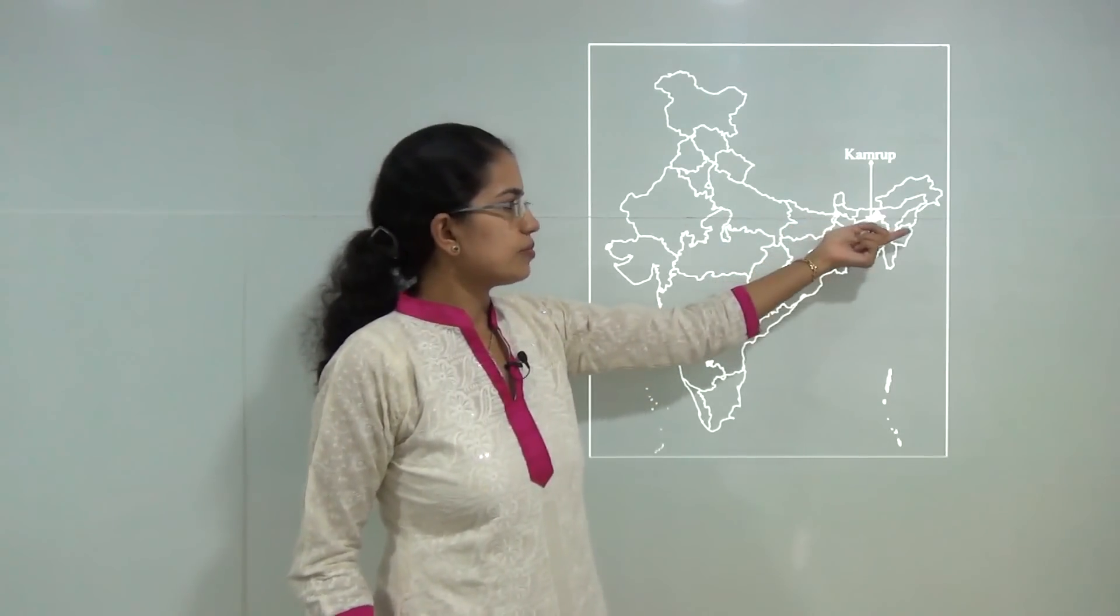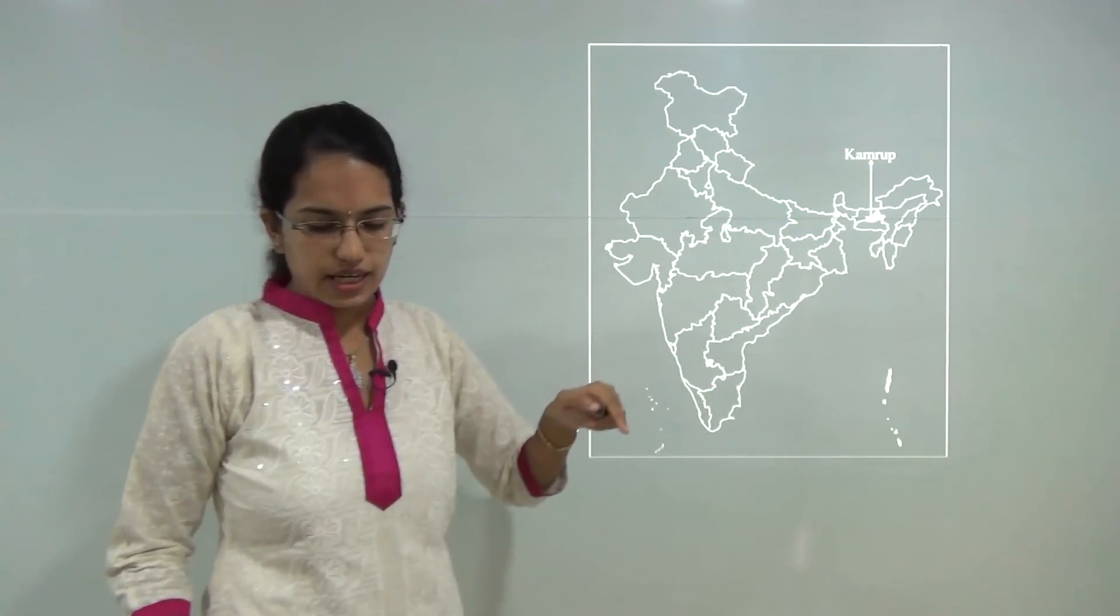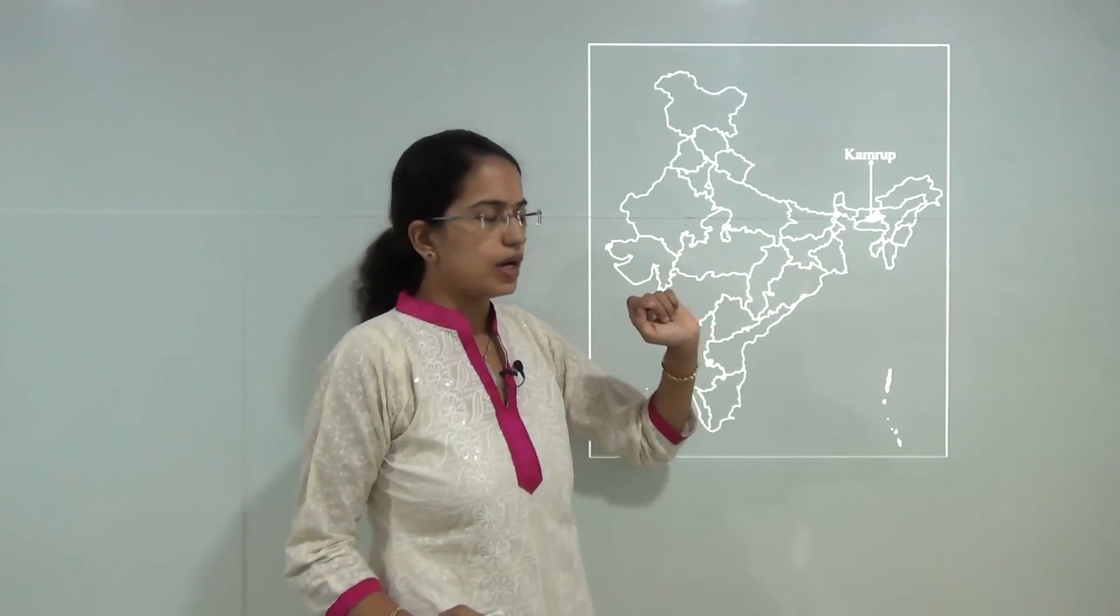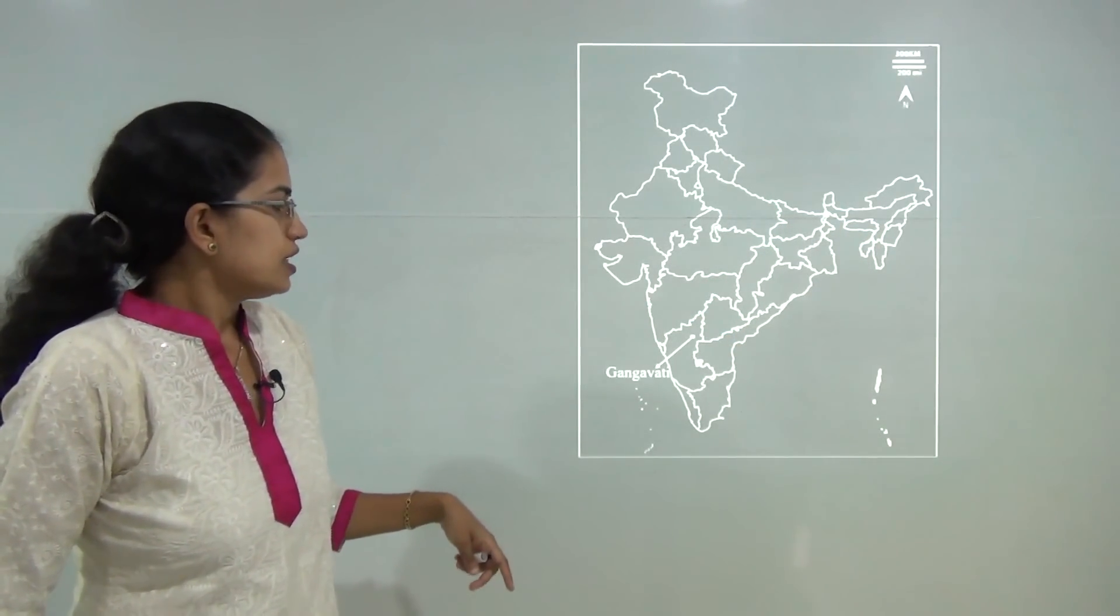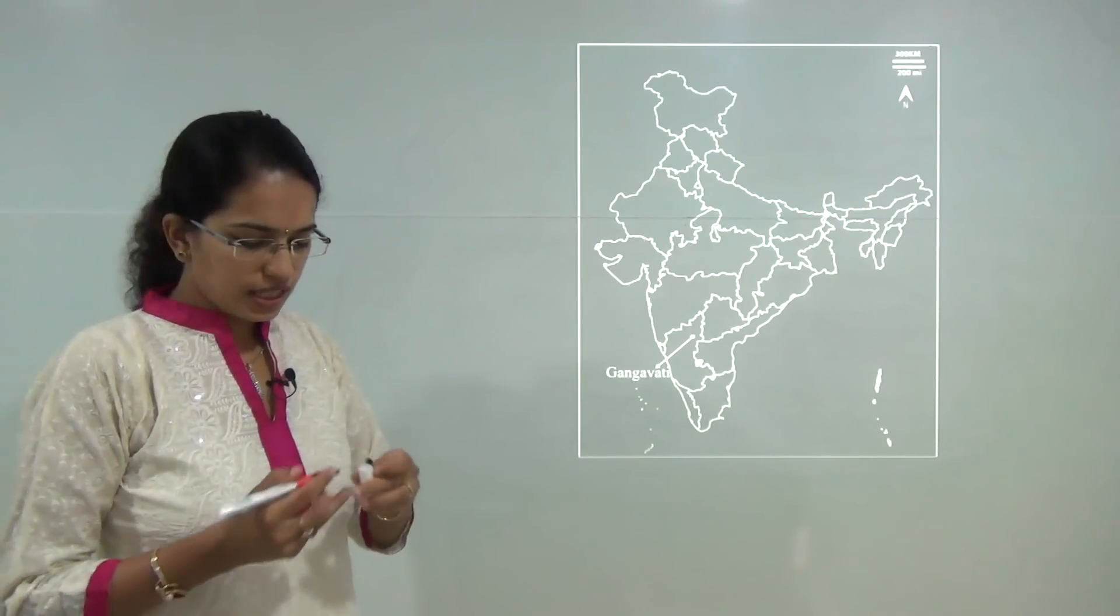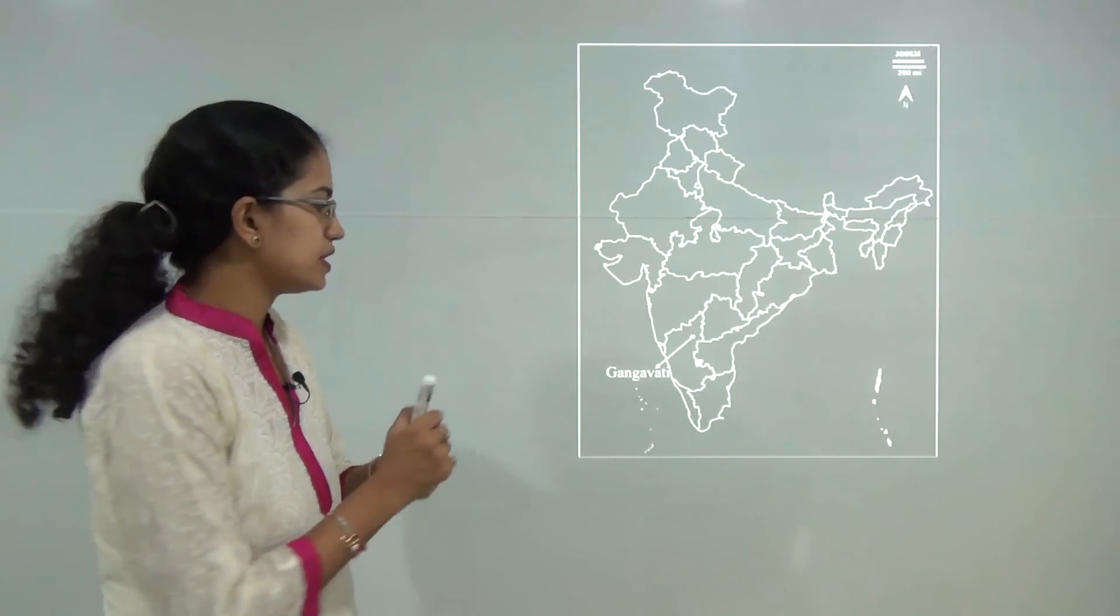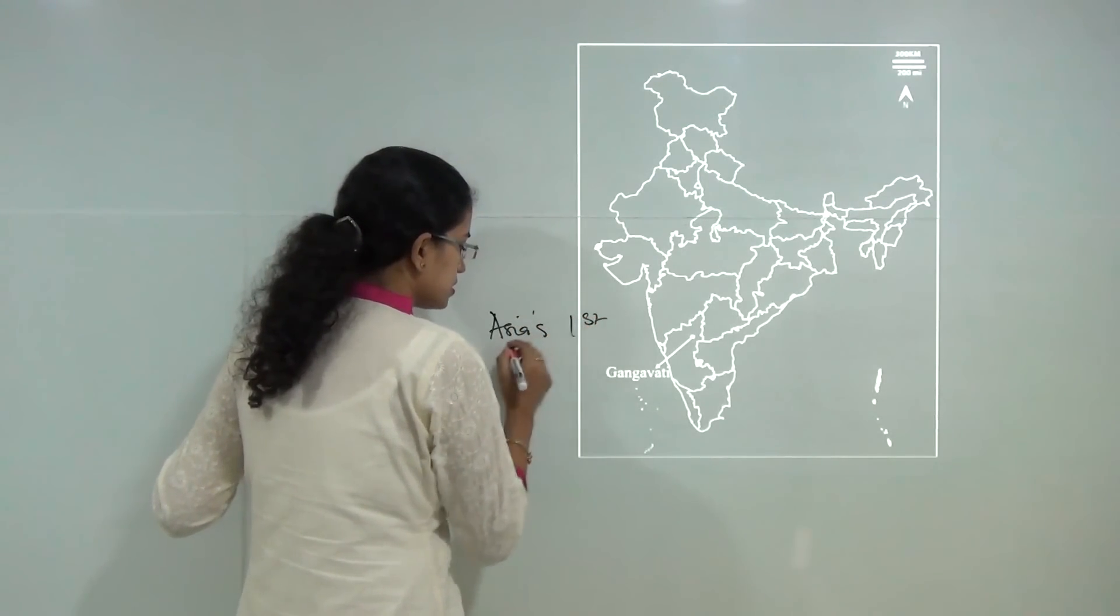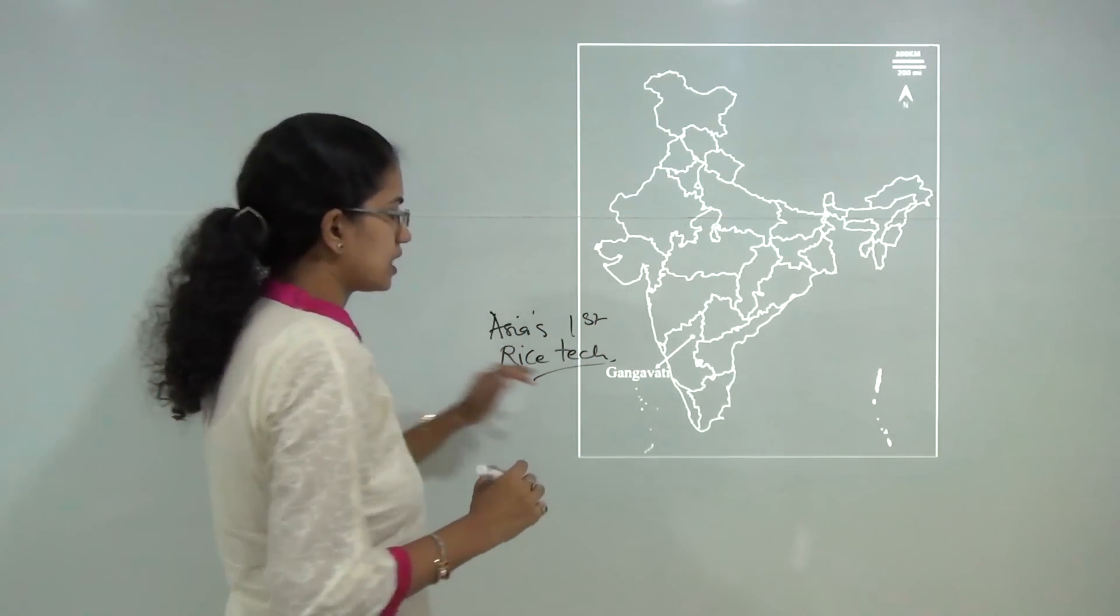Next is Kamrup. Kamrup is a metropolitan district of Assam and this district has declared the Gangetic Dolphin as the city animal of Guwahati. Kamrup was in news again recently. Then you have Gangawati. Gangawati is known for Asia's first rice technology park that has been established. Gangawati lies in Koppal district in Karnataka region.